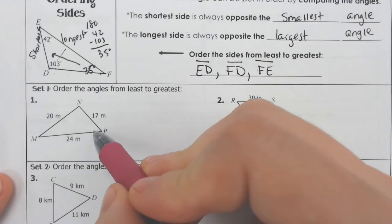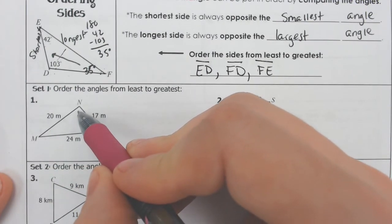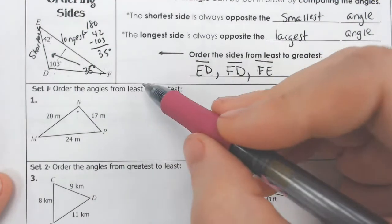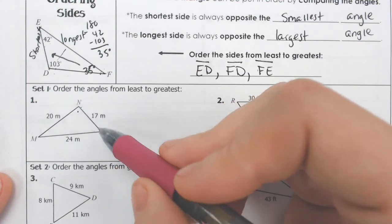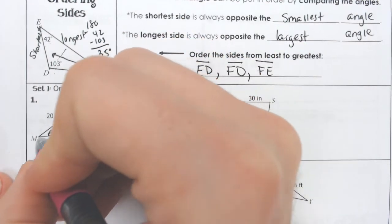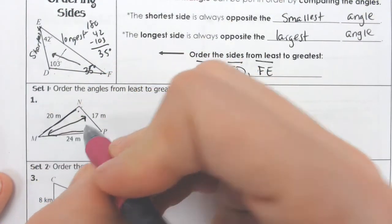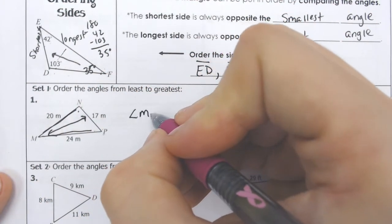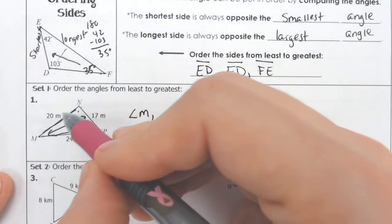If we have 24 here, that's the largest side. That's going to mean that angle N is going to be the biggest, but we're not looking for the biggest first. We're looking for the least first. 17 is the shortest side that is opened up from angle M. That is what is across from it. So that means angle M is the smallest followed by the one that is across from 20, which is angle P.